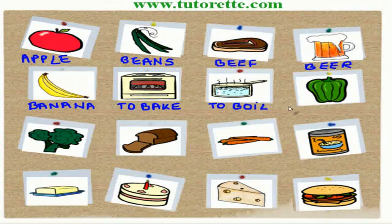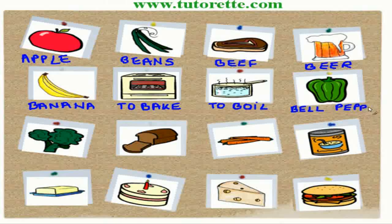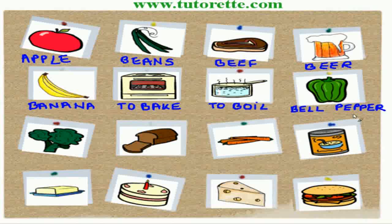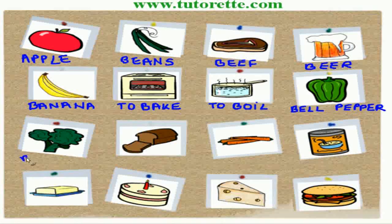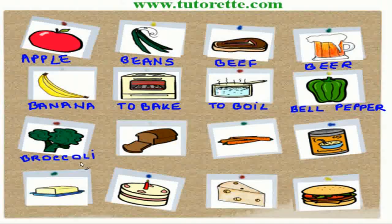This is a bell pepper. B, E, double L, P, E, double P, E, R. Bell pepper. This is the broccoli. B, R, O, double C, O, L, I. Broccoli. This is the bread.